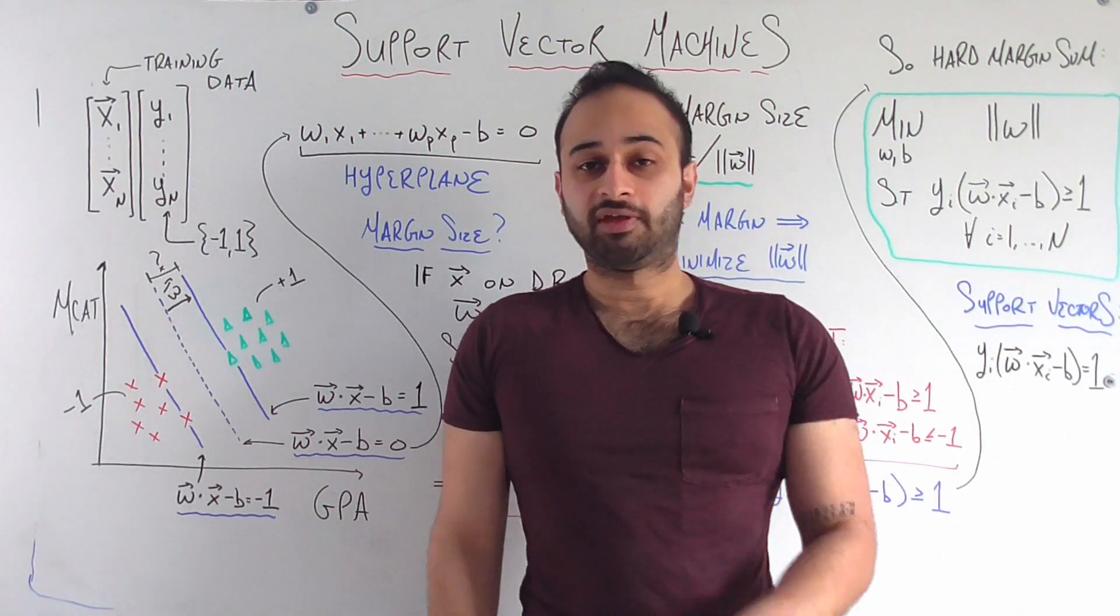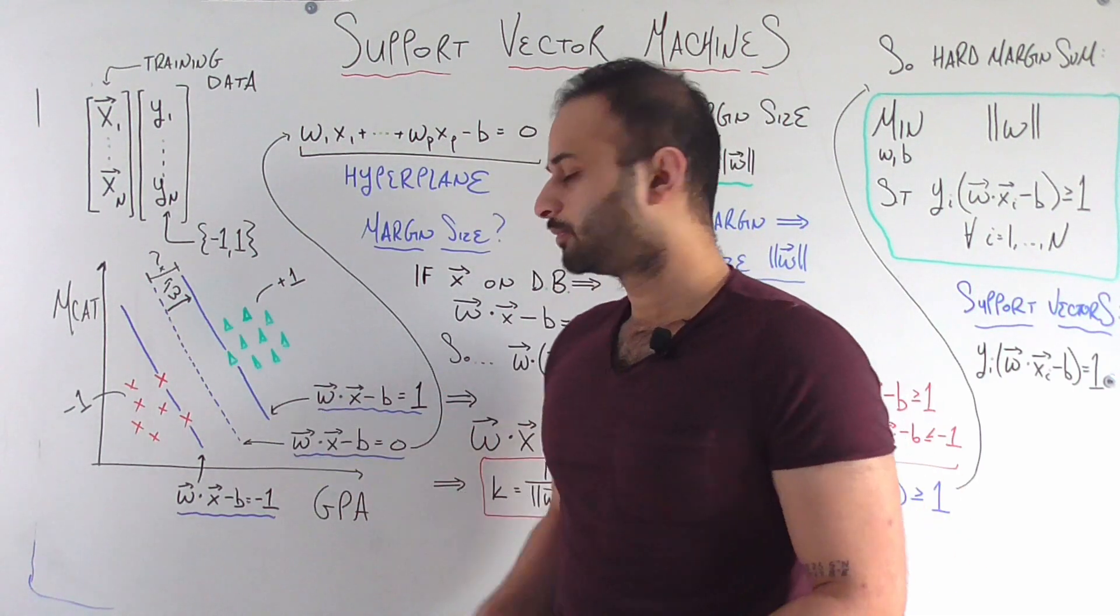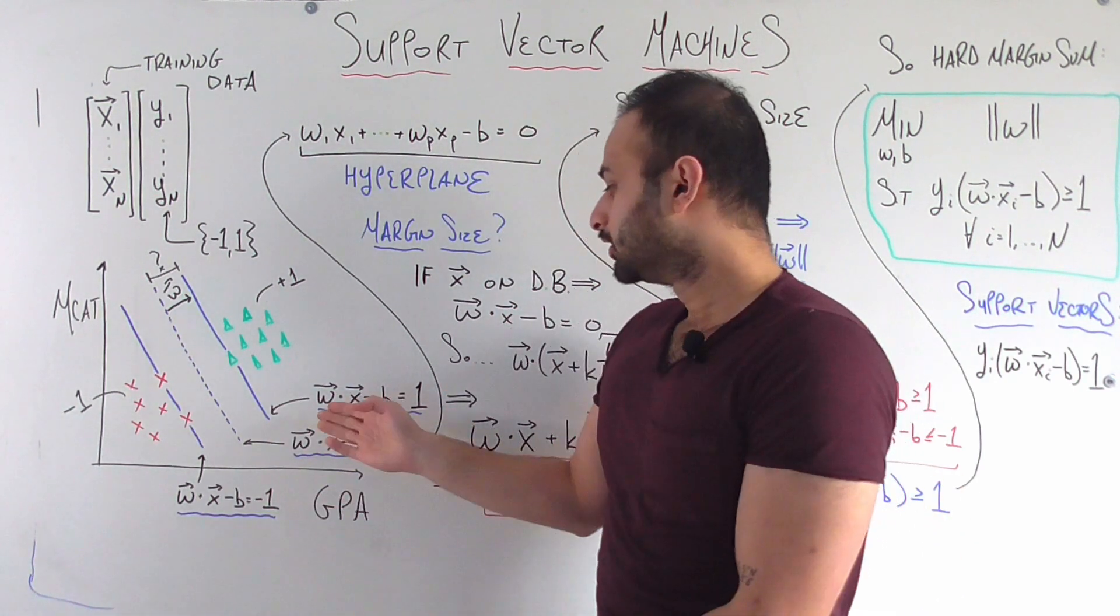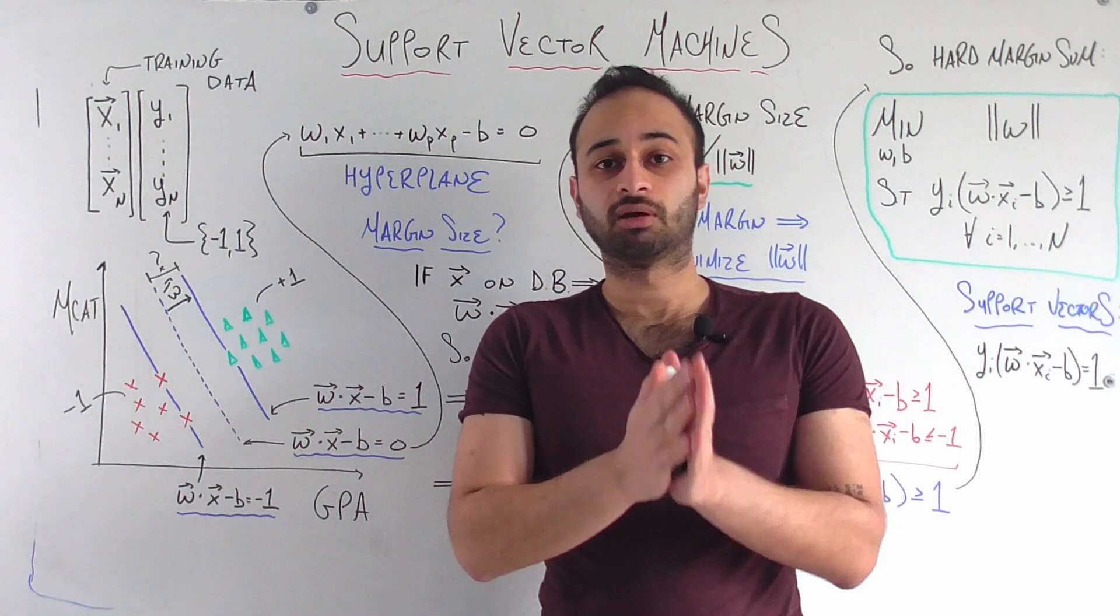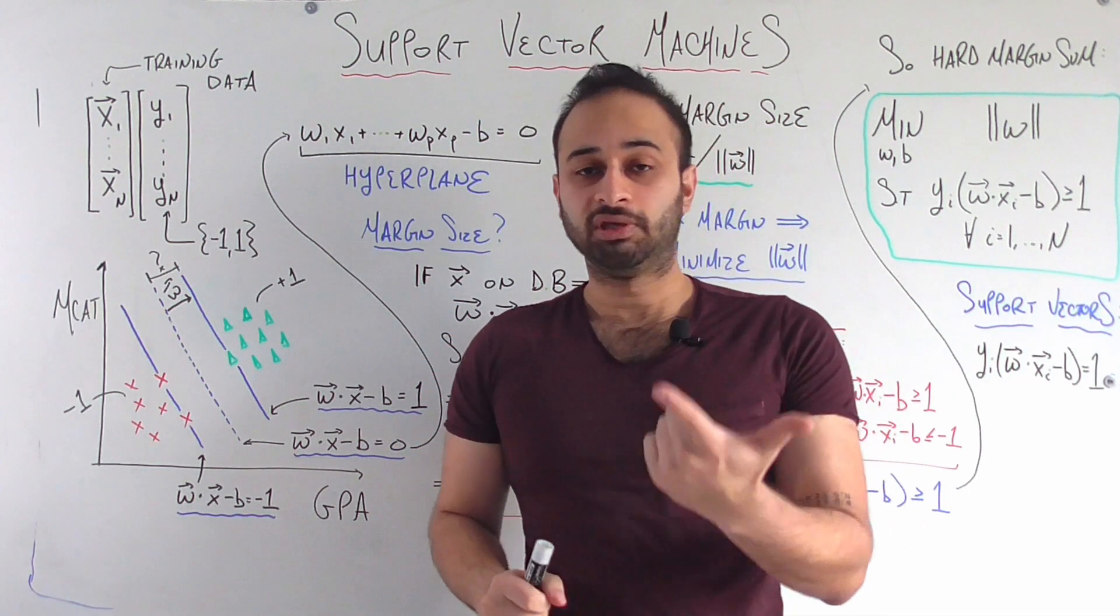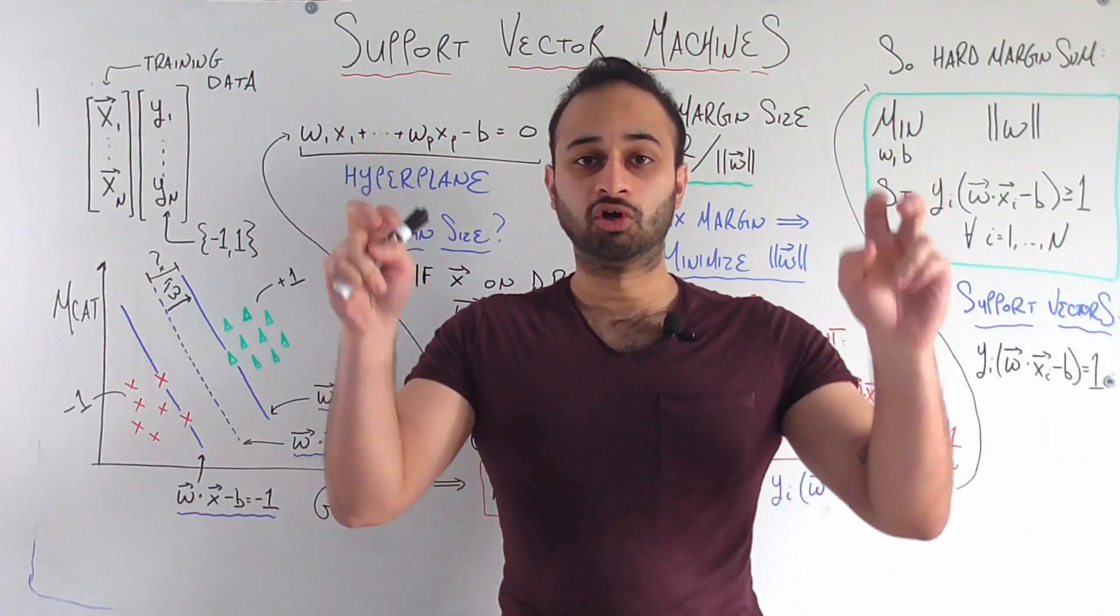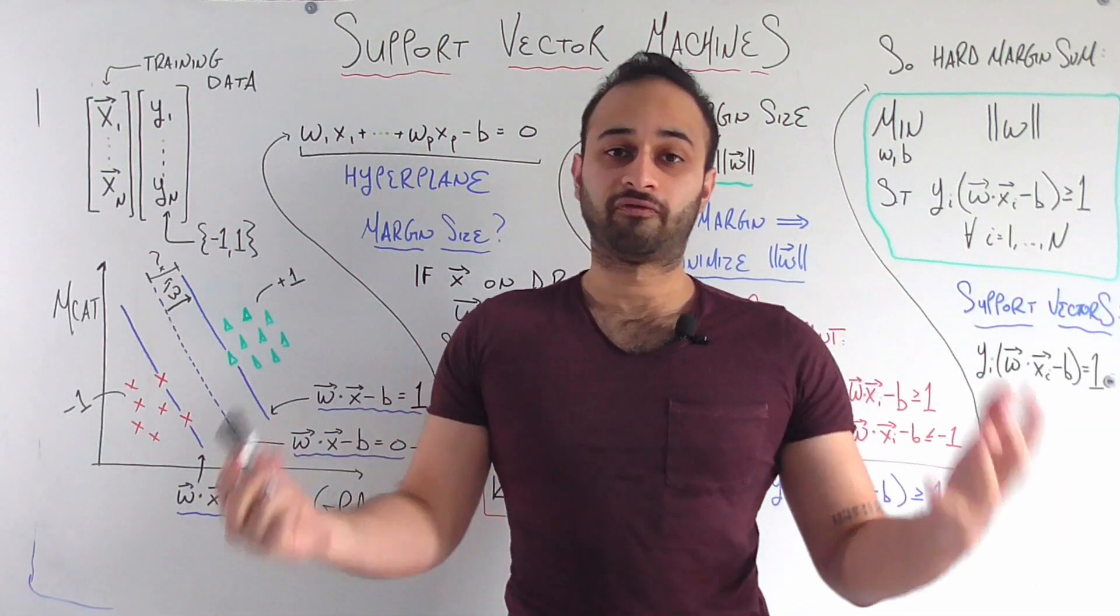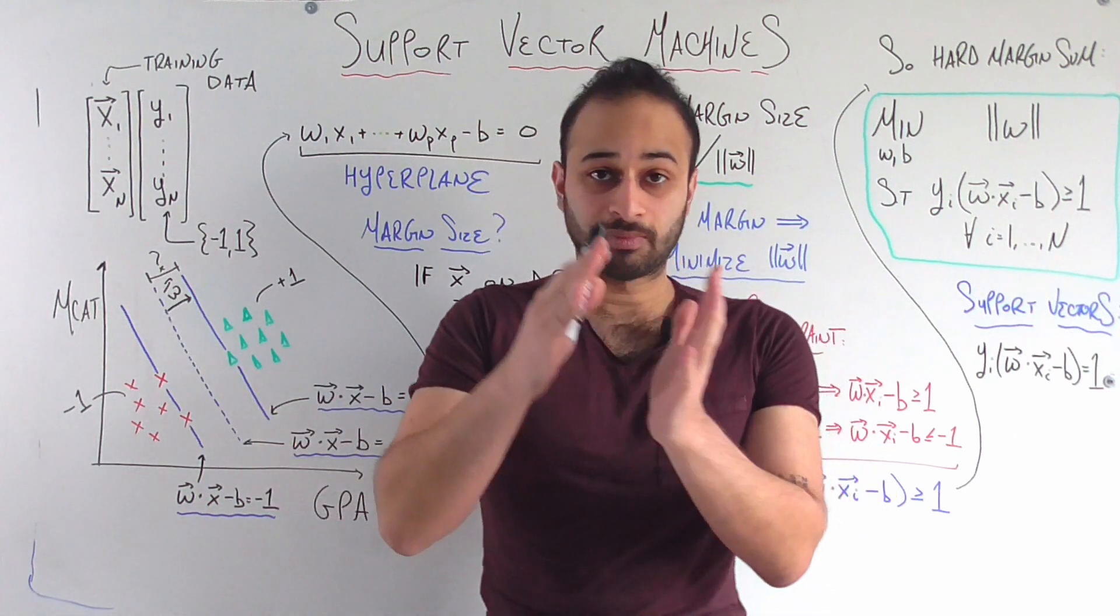Now we have two other lines in this picture and they have very similar looking equations. This top blue solid line is given by w dot x minus b equals 1, and the bottom blue line is given by w dot x minus b equals negative 1. It turns out that w and b are the only two coefficients we care about going forward. If we can find good values for w and b, we're finished. And by good values we mean values such that we maximize this margin.